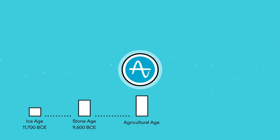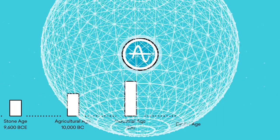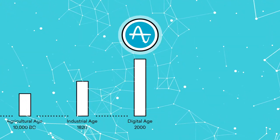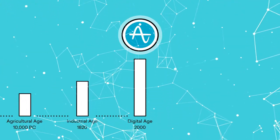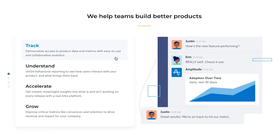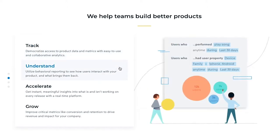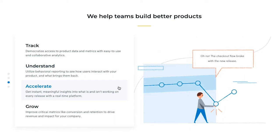Amplitude has brought analytics into the digital age with a whole new approach to product data. They've made product data easily accessible to your teams with collaborative metrics. They offer behavioral reporting to understand what really makes your users tick, and their real-time tracking gives you meaningful insights now, so you can double down or pivot if need be.